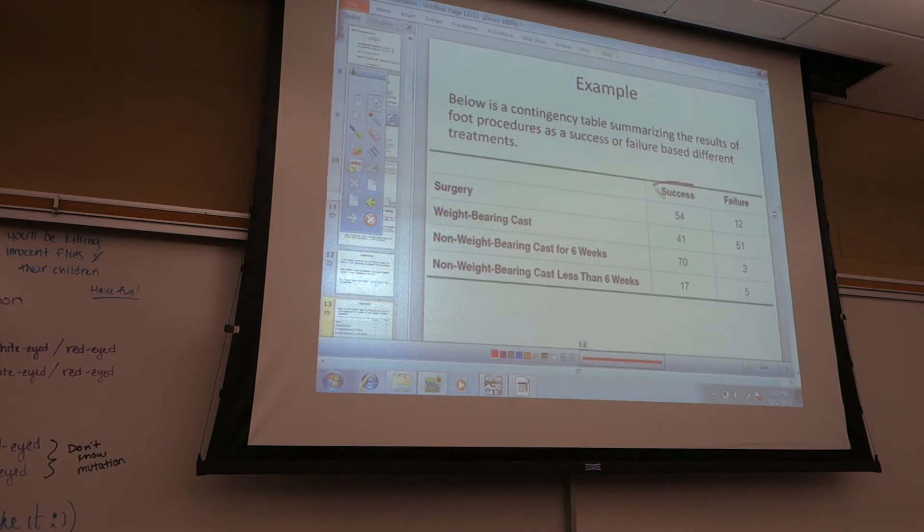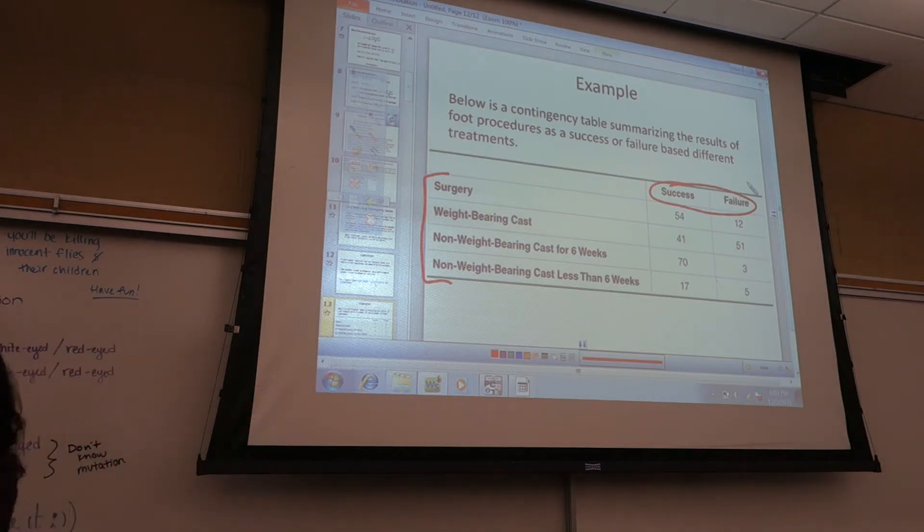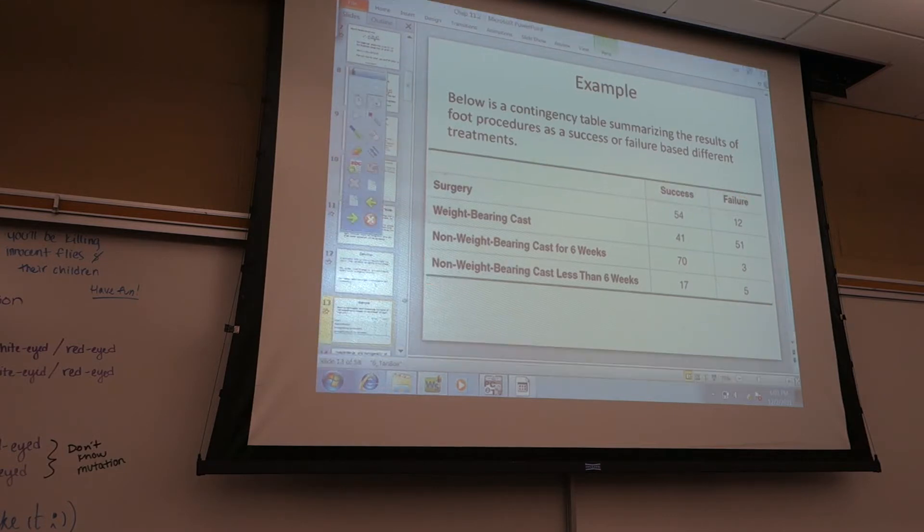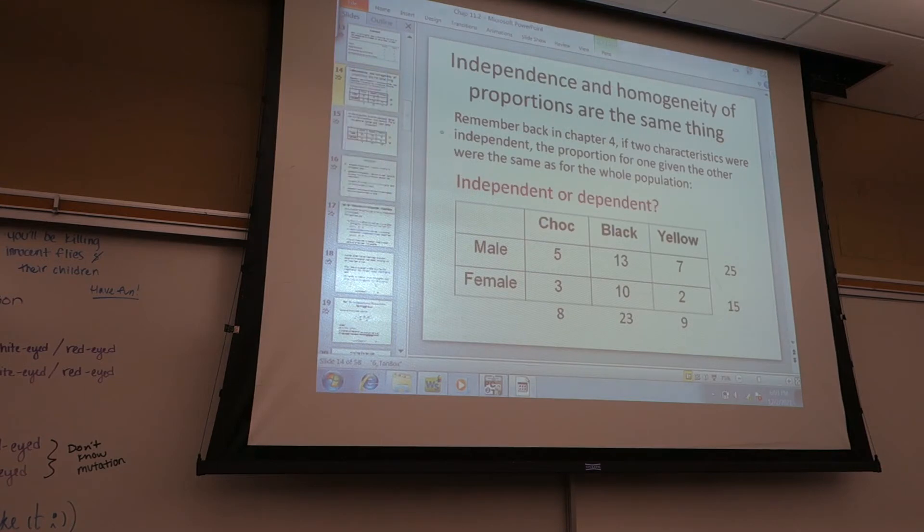You've seen them before. Here's an example one. So there's one variable which is the outcome, success or failure. The other one is the type of treatment. There's four rows here and there's two columns, success column and the failure column. You can remember columns because columns are like houses. Houses have columns that go straight up and down. And the rows are these guys. So this one has four rows and two columns.